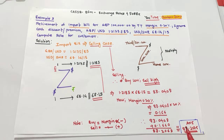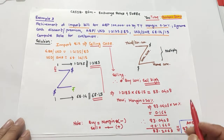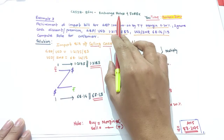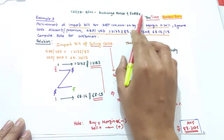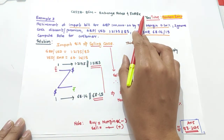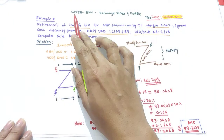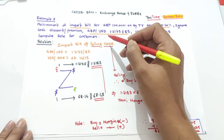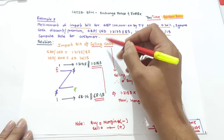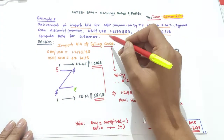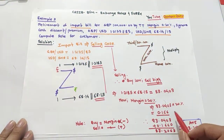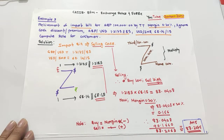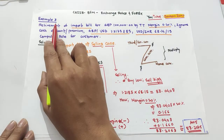In this video we are going to see exchange rates and forex businesses — that is your CIB BFM — and we are going to cover some numericals related to cross rates.